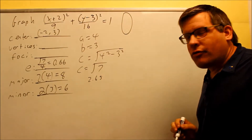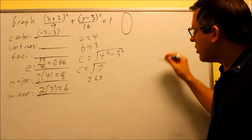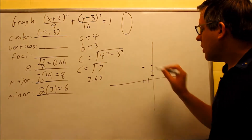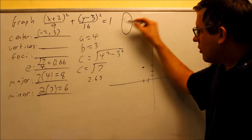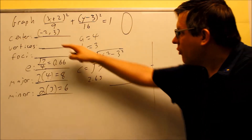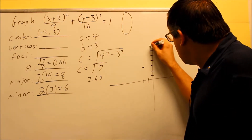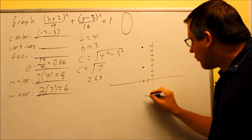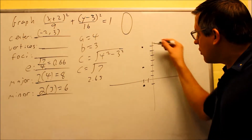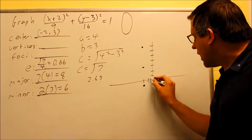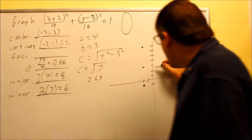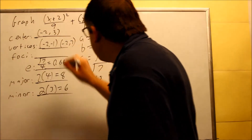For the vertices and foci, I'll begin by graphing the center at negative 2, 3. Since the ellipse opens up and down, the a value of 4 goes up and down from the center. Going up 4 gives one vertex, going down 4 gives the other. The vertices are at negative 2, negative 1 and negative 2, 7.